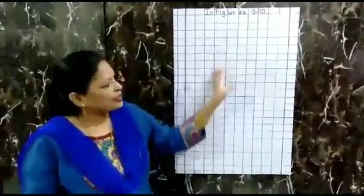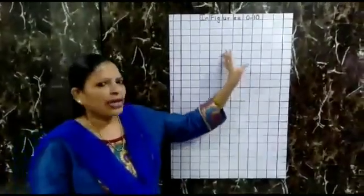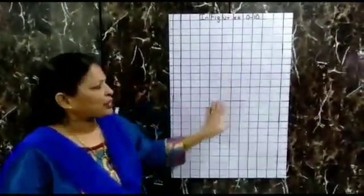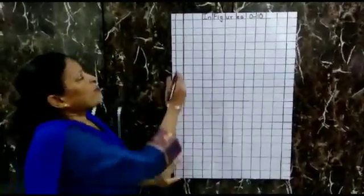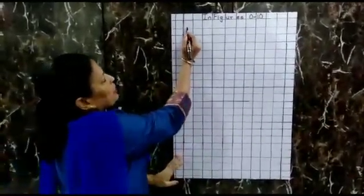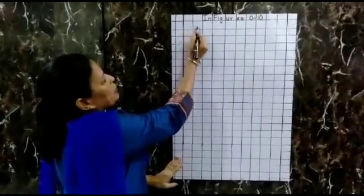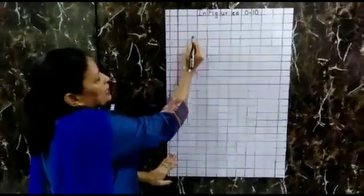Children, can you see this chart? It just looks like the page of your maths notebook. Can you see this red margin? Yes. When you write the number, you have to leave the first square and go to the second square and start writing the number.